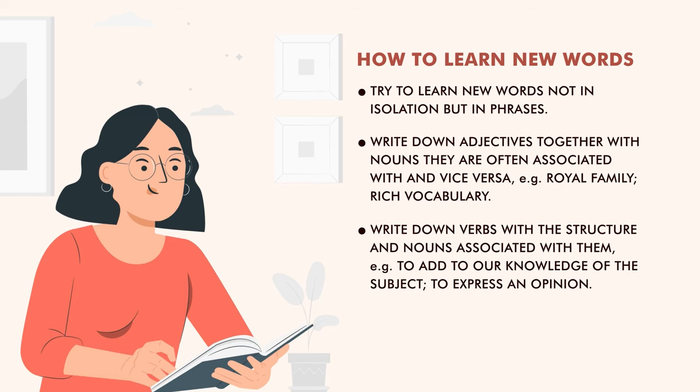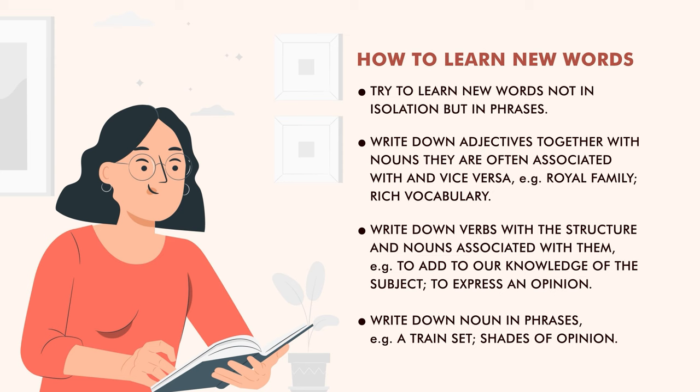Then write down verbs with the structure and nouns associated with them. So you'll have a phrase like 'to add to our knowledge of the subject' — 'to add' would be the verb. Or 'to express an opinion' — 'to express' is again a verb, so you say it all together. Then write down noun phrases: 'a train set,' 'shades of opinion' — never 'shades' separately, 'of' separately, 'opinion' separately; it is together.